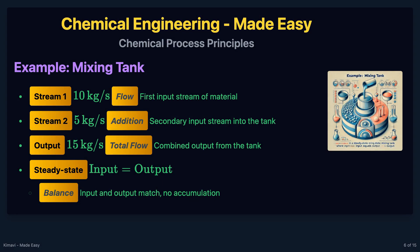Consider a mixing tank where two streams of water are mixed. Stream 1 has a flow rate of 10 kilograms per second, and stream 2 has a flow rate of 5 kilograms per second. The output stream has a flow rate of 15 kilograms per second. Assuming steady state operation, the material balance equation simplifies to input equals output. Therefore, 10 kilograms per second plus 5 kilograms per second equals 15 kilograms per second.